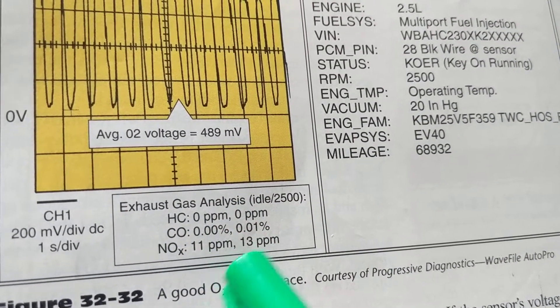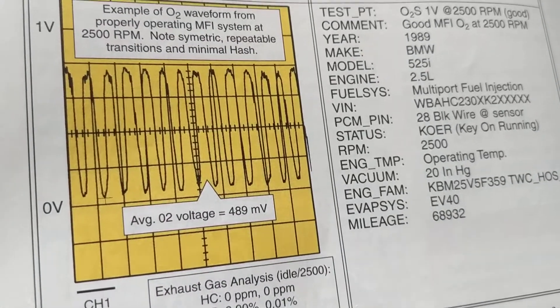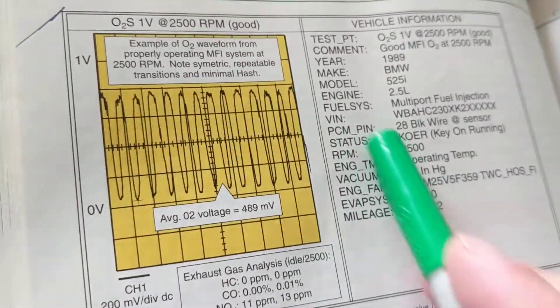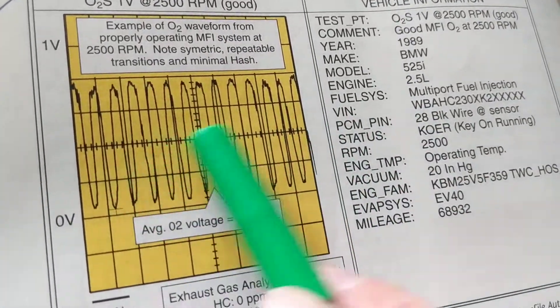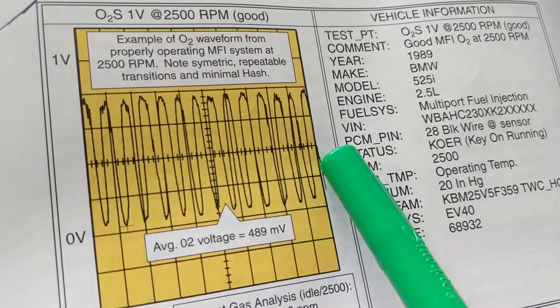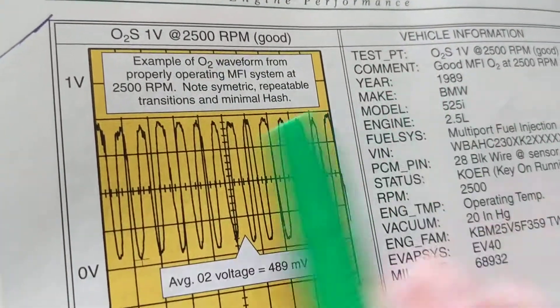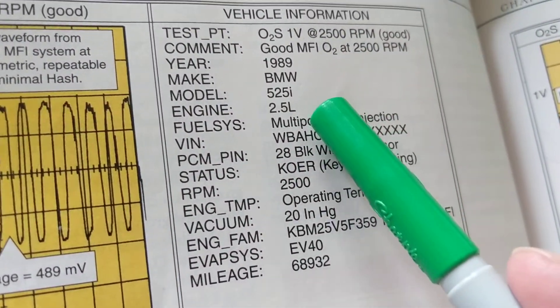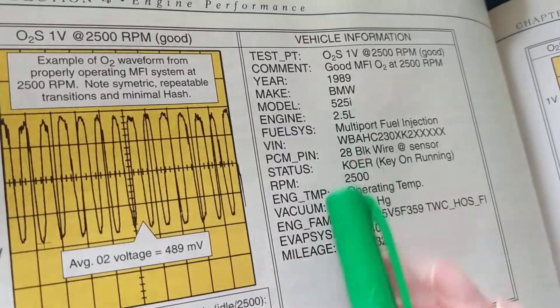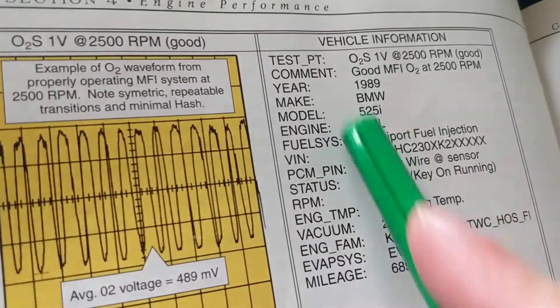You see hydrocarbons here, it's parts per million. CO is carbon monoxide in percentage. Oxides of nitrogen, 13 parts per million. There are specifications—whatever comes out of the exhaust has to be within limits for proper emissions. If you're not familiar with a scope and you've never seen a signal, this will be something new to you. A proper signal of an oxygen sensor almost looks like a sine wave. The textbook tells me all this information: engine type, operating temperature, vacuum, EVAP system, mileage. You put all these things into the scanner, but sometimes it detects it automatically.